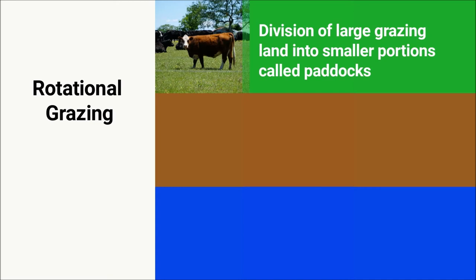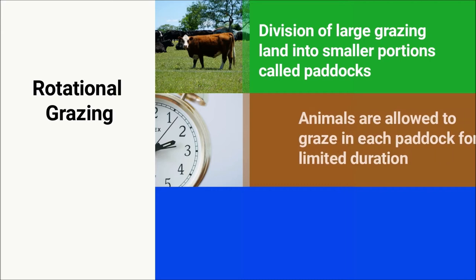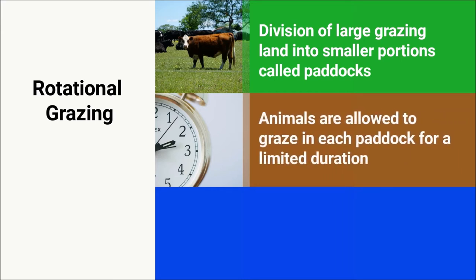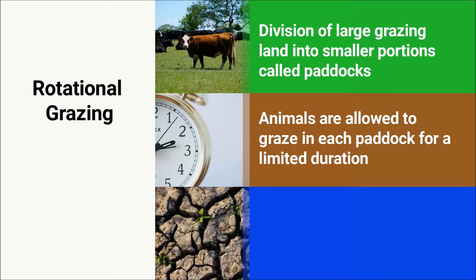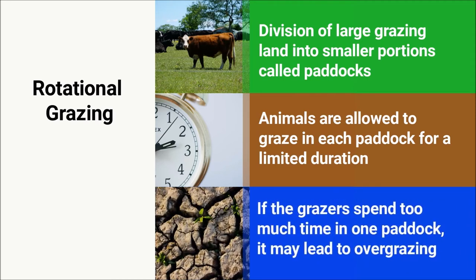Rotational grazing involves the division of large grazing land into smaller portions called paddocks. The animals are allowed to graze in each paddock for a limited duration, after which they are moved to the next paddock. This allows the pasture to recover in the previously grazed paddock. When it comes to grazing management, it's all about the time that the animals take in a section of land. If the grazers spend too much time in one paddock, it may lead to overgrazing. Coming to a paddock that is not fully recovered can also damage the pasture.